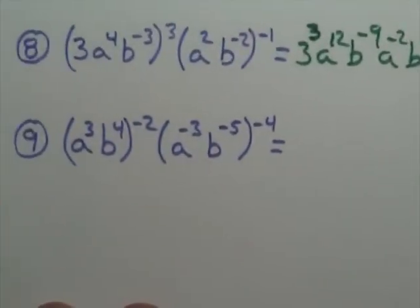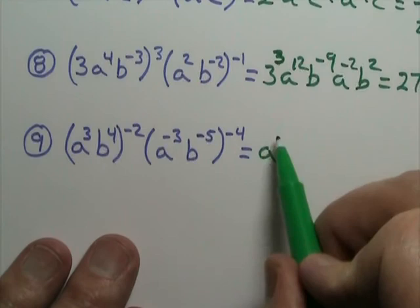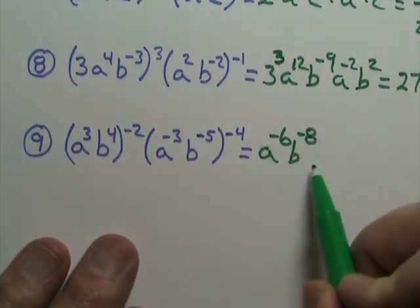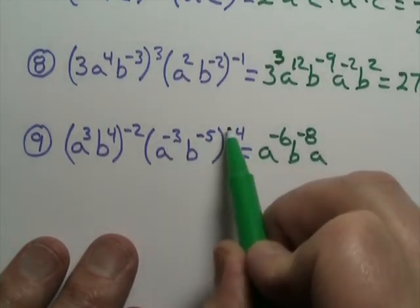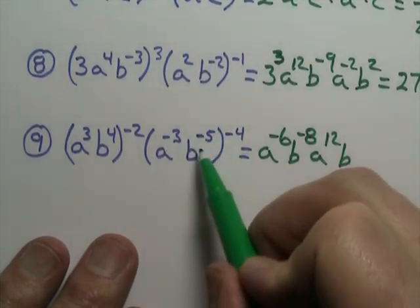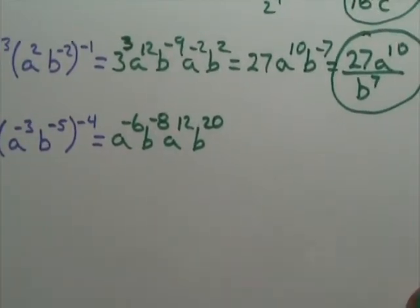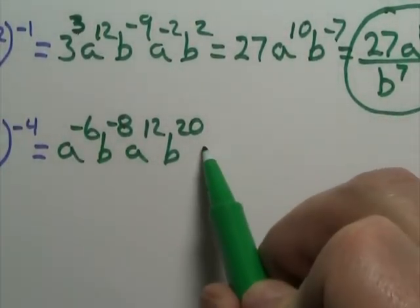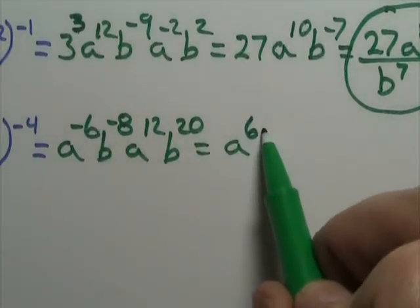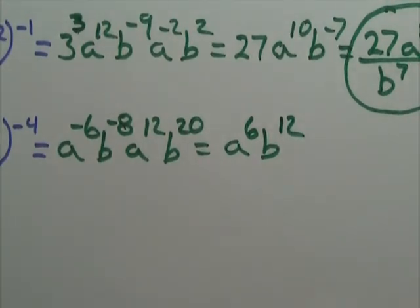Last one. Start off with our A — multiply the exponents — 3 times negative 2. Then the B: 4 times negative 2. Then I do my A over here: negative 3 times negative 4 is positive 12. Then I have a B: negative 5 times negative 4 is positive 20. So now I do my A's — I have a negative 6 and a 12 — 12 minus 6. Then I have my B's: minus 8 and 20 — 20 minus 8. And that is my answer.